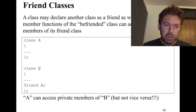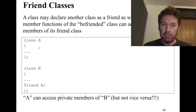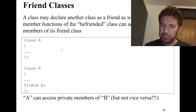Regarding friendship: if class B announces that A is its friend, then A can access the private parts of B — but not vice versa. Since A hasn't announced a friendship with B, B cannot access the private parts of A.